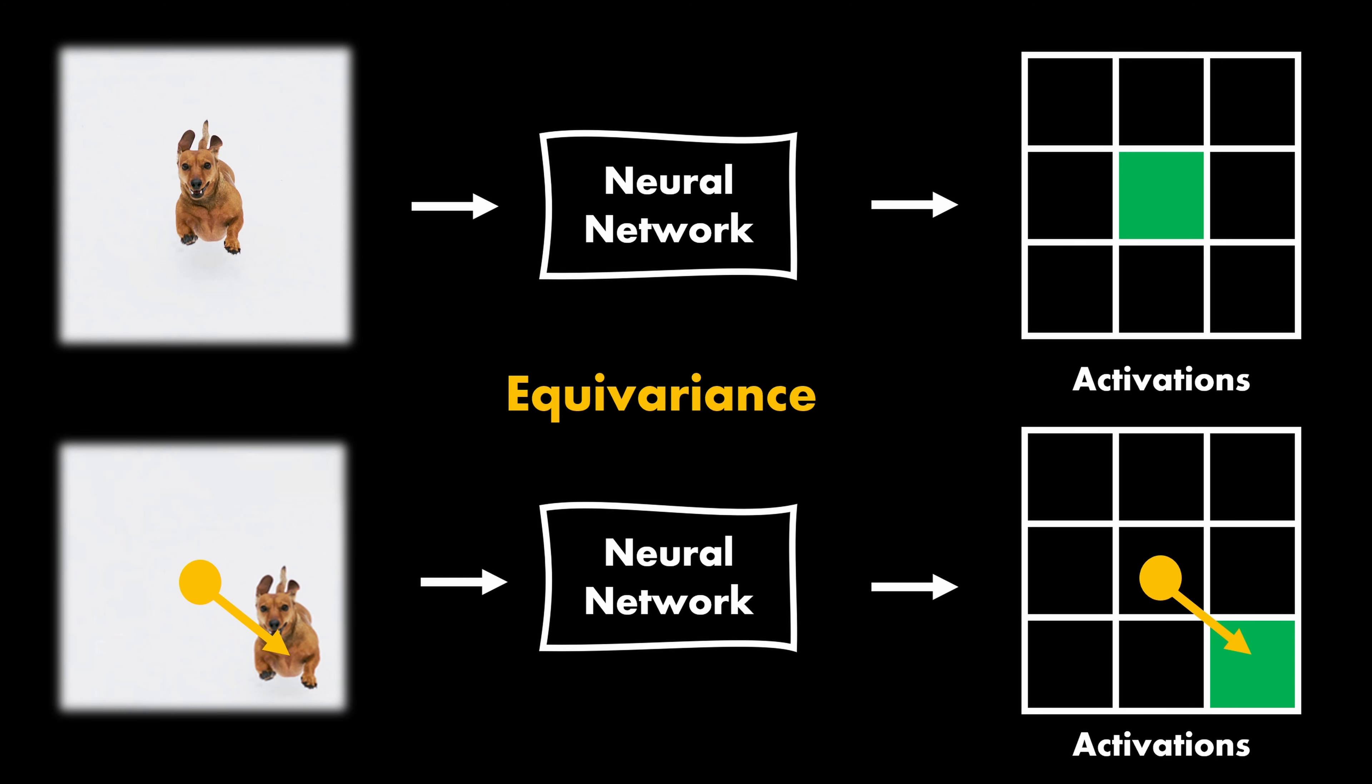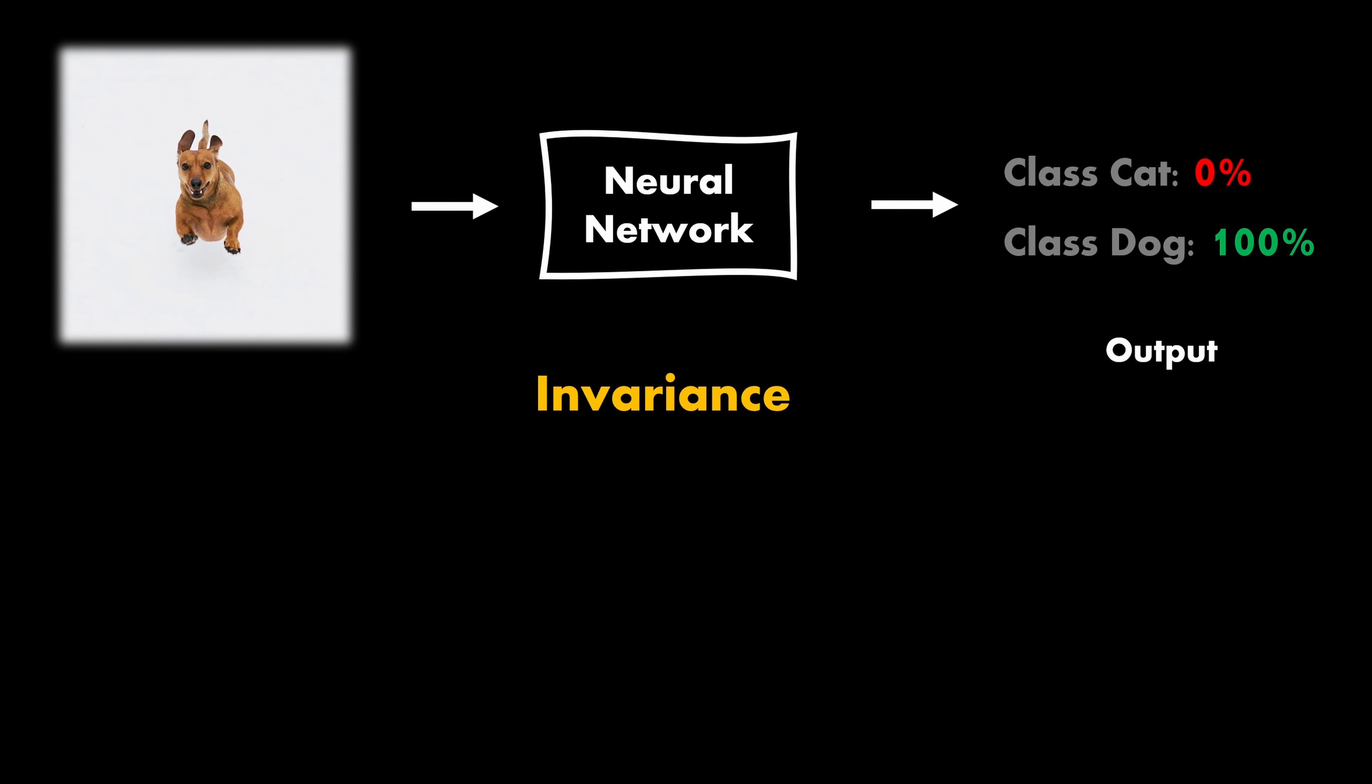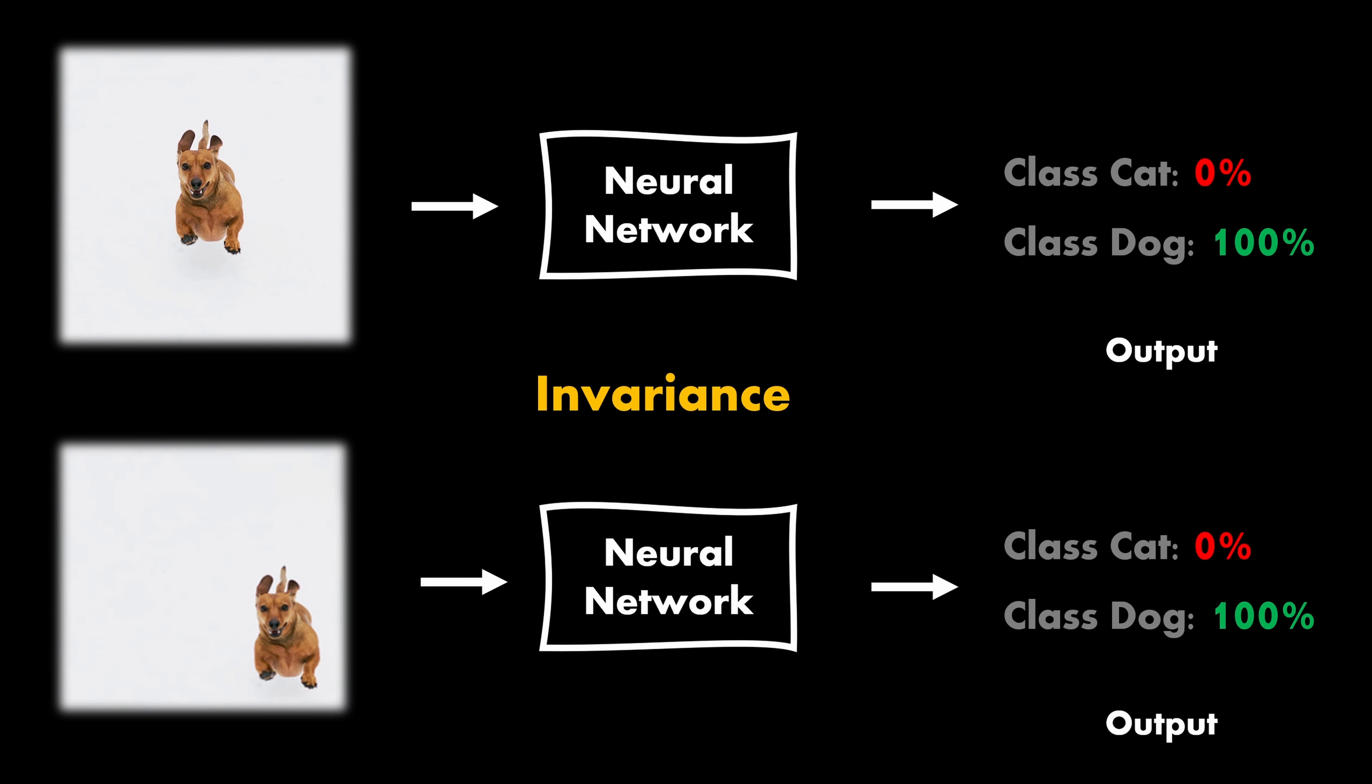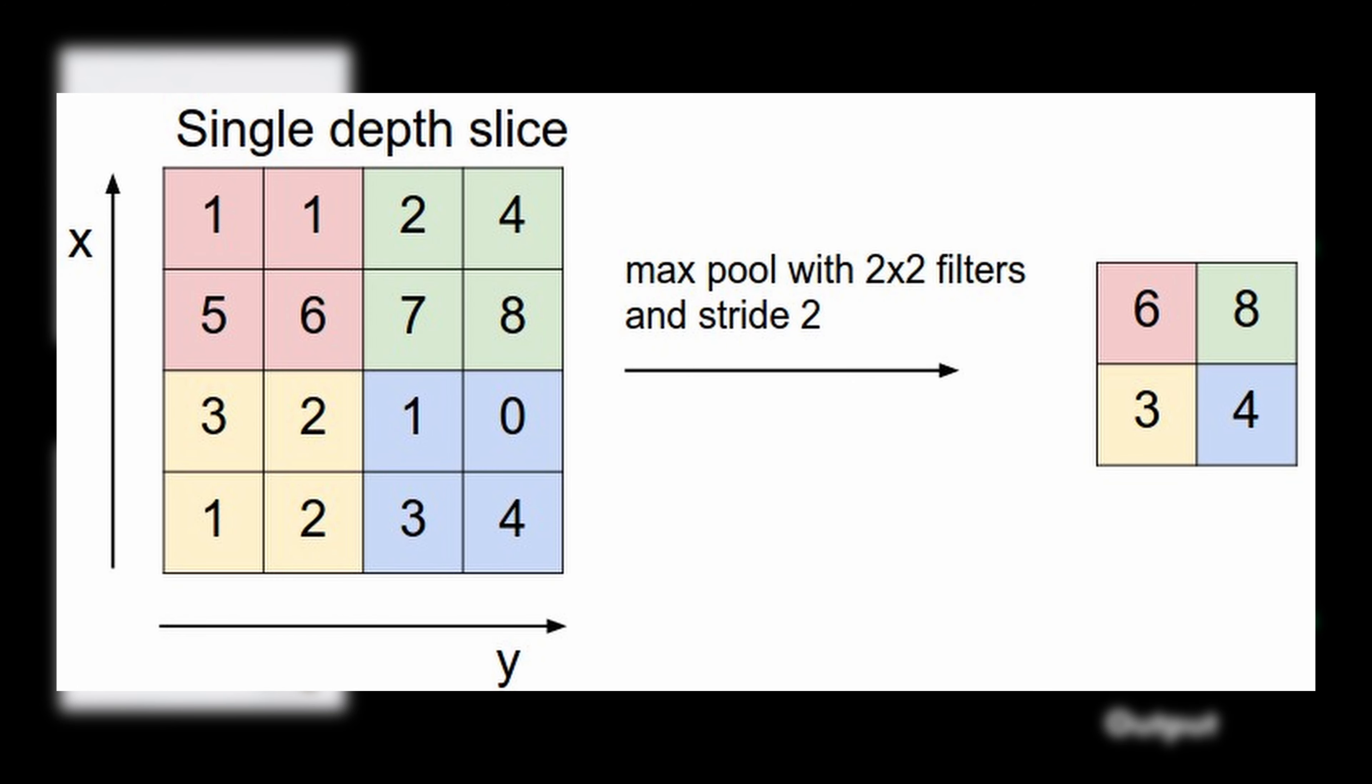But you might have also heard of invariance. I also want to get this out of the way early. In the case of invariance, the output does not change at all. So, it has no variance to transformations of the input. The system basically produces the exactly same response regardless of how the input is transformed. In this example, the fact that there is a dog does not depend on where it is located. So, the model prediction stays the same. In many neural networks, invariance comes from pooling layers that aggregate some activations at the end of the network. For example, when you apply max pooling, it doesn't matter which neuron spits out the max value, but just that it exists.